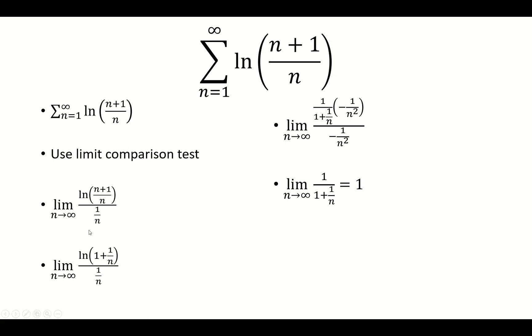But we already know that 1 over n is a harmonic series that diverges, so therefore both series diverge by the limit comparison test.